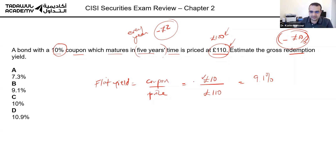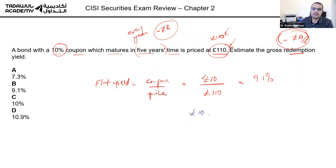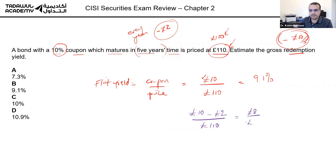He's getting a coupon of 10 but losing two pounds from his capital every year. So the gross redemption yield calculation is eight over 110, which gives you 7.3 percent.